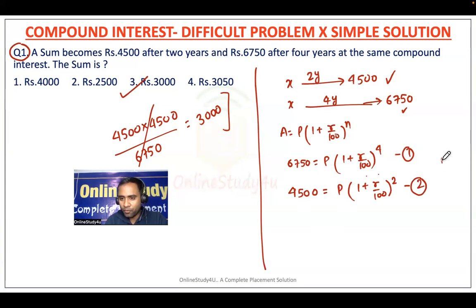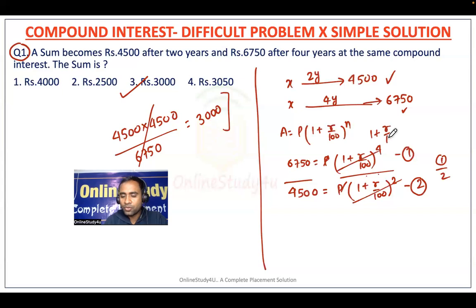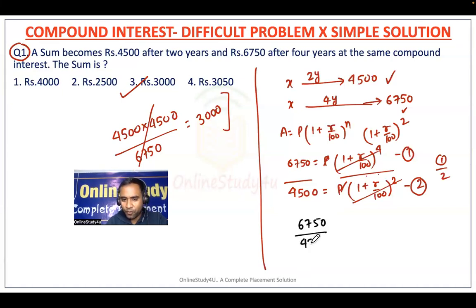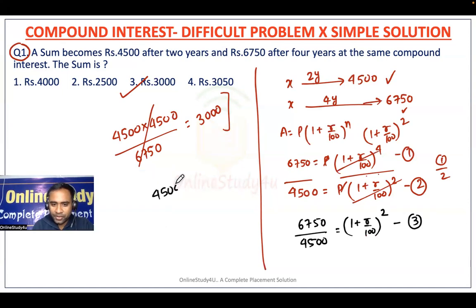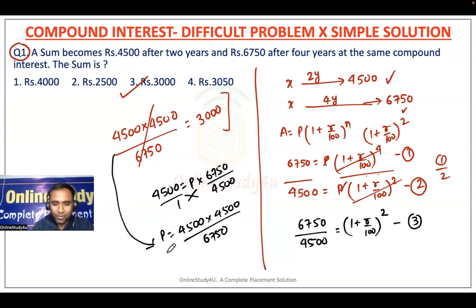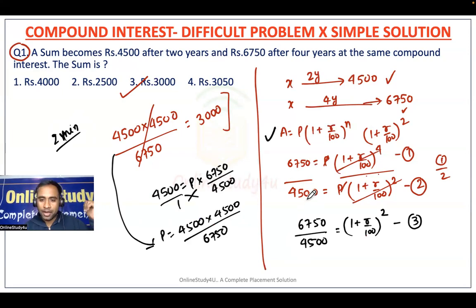Now divide equation one by equation two. The principal cancels out, and (1 + r/100)^2 terms reduce, giving: 6750/4500 = (1 + r/100)^2. Now put this equation three into equation two: 4500 = Principal × (6750/4500). By cross multiplication, Principal = 4500 × 4500 / 6750, which gives 3000. This takes almost two minutes using the formula of compound interest.